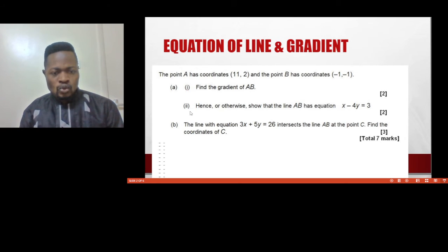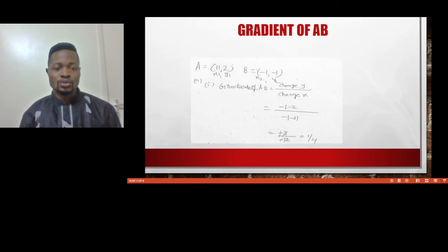Number two, show that the line AB has this equation: X minus 4Y equals 3. All you are solving, you must arrive at this equation. Number three, the line with equation 3X plus 5Y equals 26 intersects the line AB at point C. Find the coordinate of C.